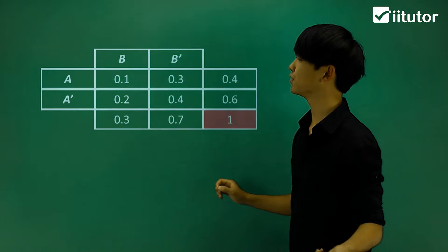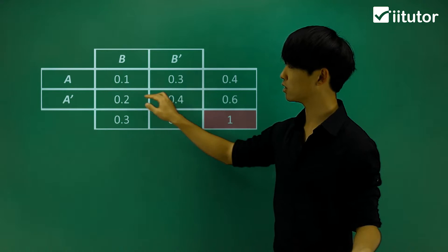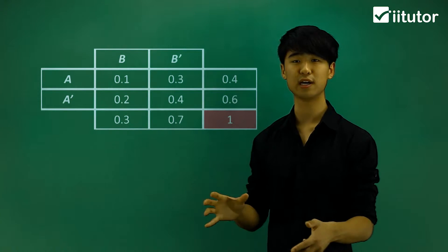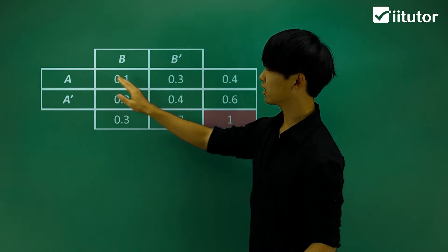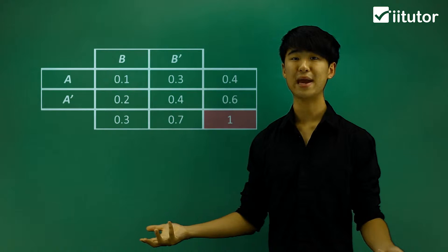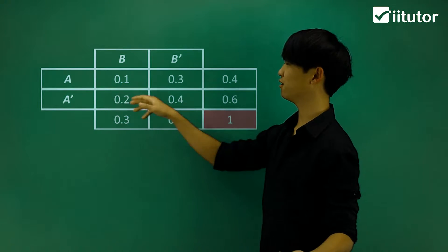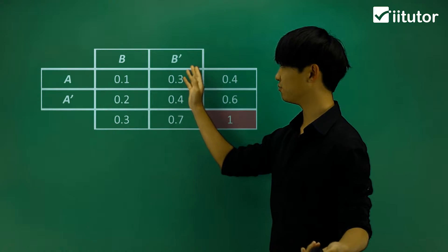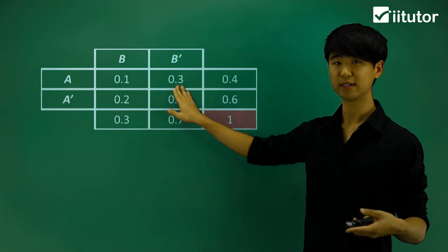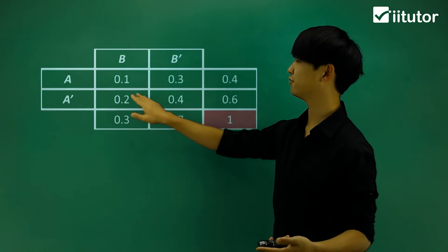How do we actually read this table? If you take a look at the first four boxes, that's when two of the events are held together. For example, what is the probability of A and B occurring? Well, that's 0.1. What is the probability of event A and the complement of B occurring? Then that is 0.3.